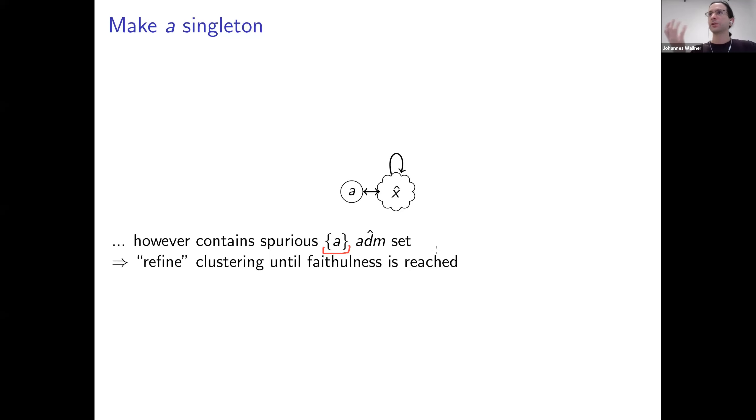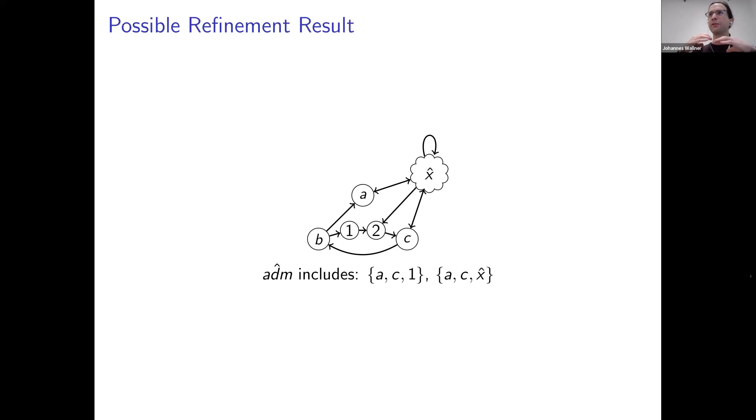So why? Because in the original argumentation framework given by Prakken or by this translation, there is no admissible set containing S. And now what we do is actually the next thing was computed by our prototype in an automatic sense. So we actually refine the abstraction until we reach a faithful clustered argumentation framework. And this is one possible refinement, the one computed by our prototype. But in general, there can be different refinement strategies.